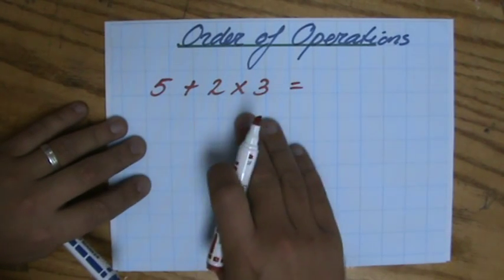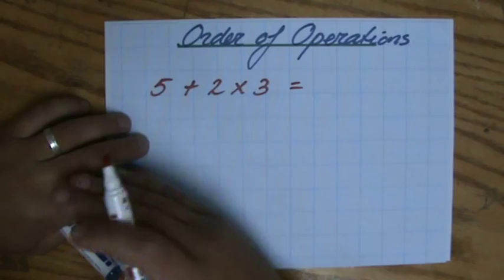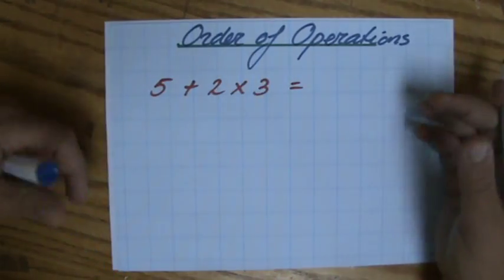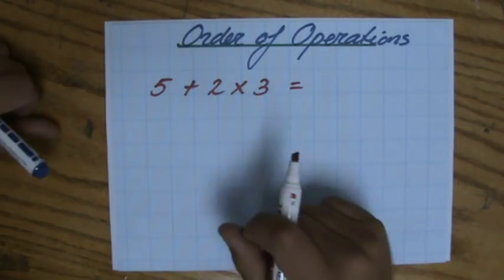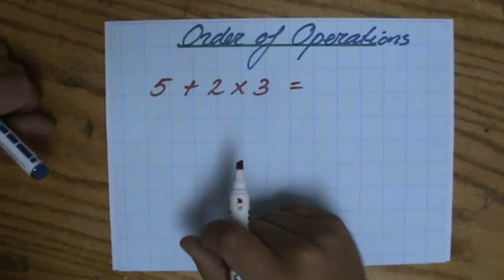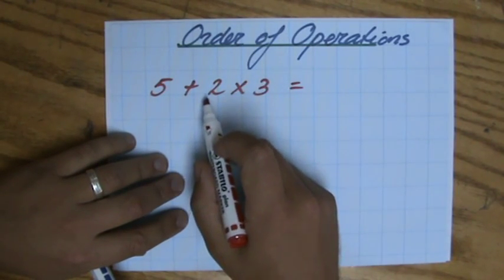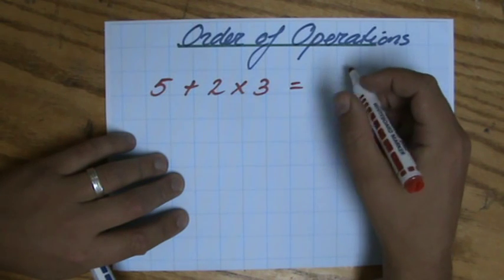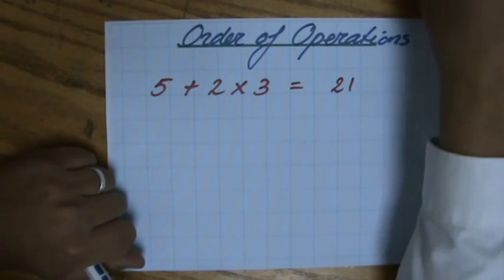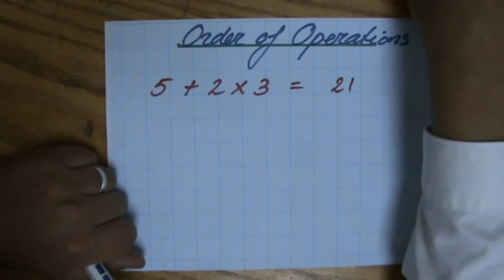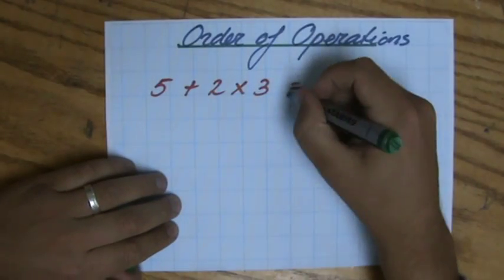I wrote down 5 plus 2 times 3 and I want you to evaluate it. What is the answer to that? Quite a few people are going to say, well 5 plus 2, that is 7 times 3, and give the answer 21. And unfortunately that is absolutely wrong.